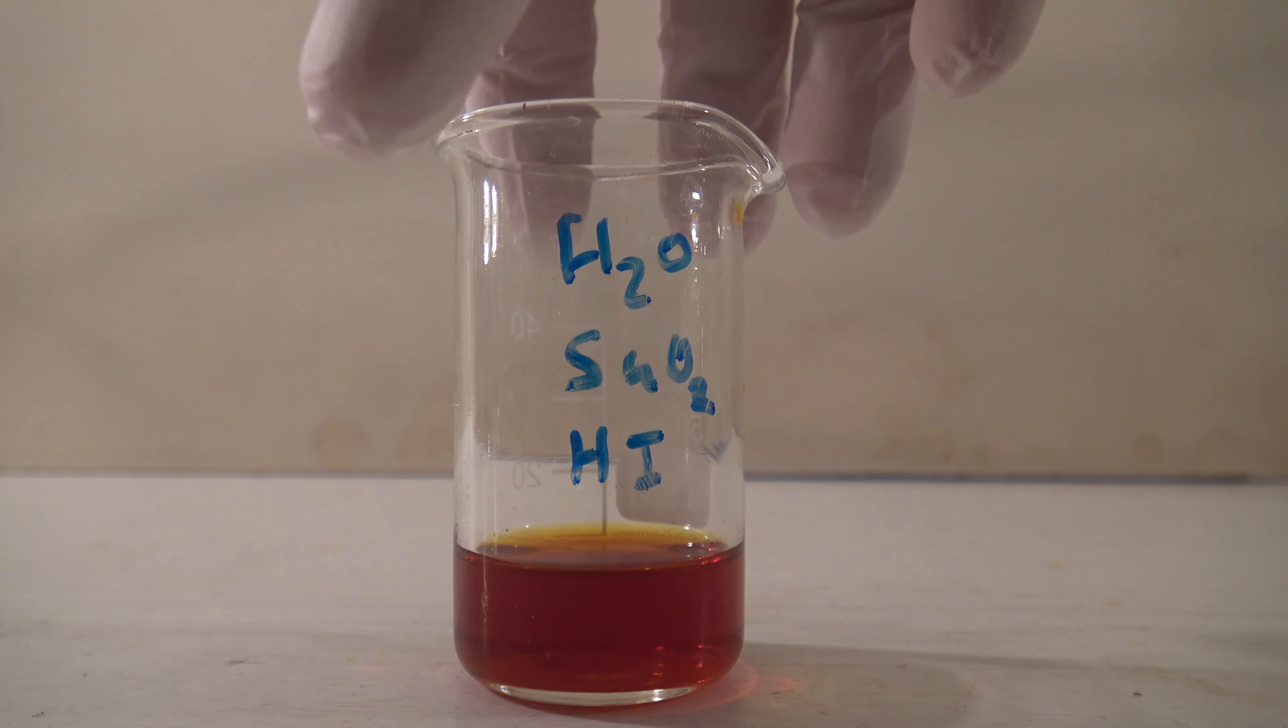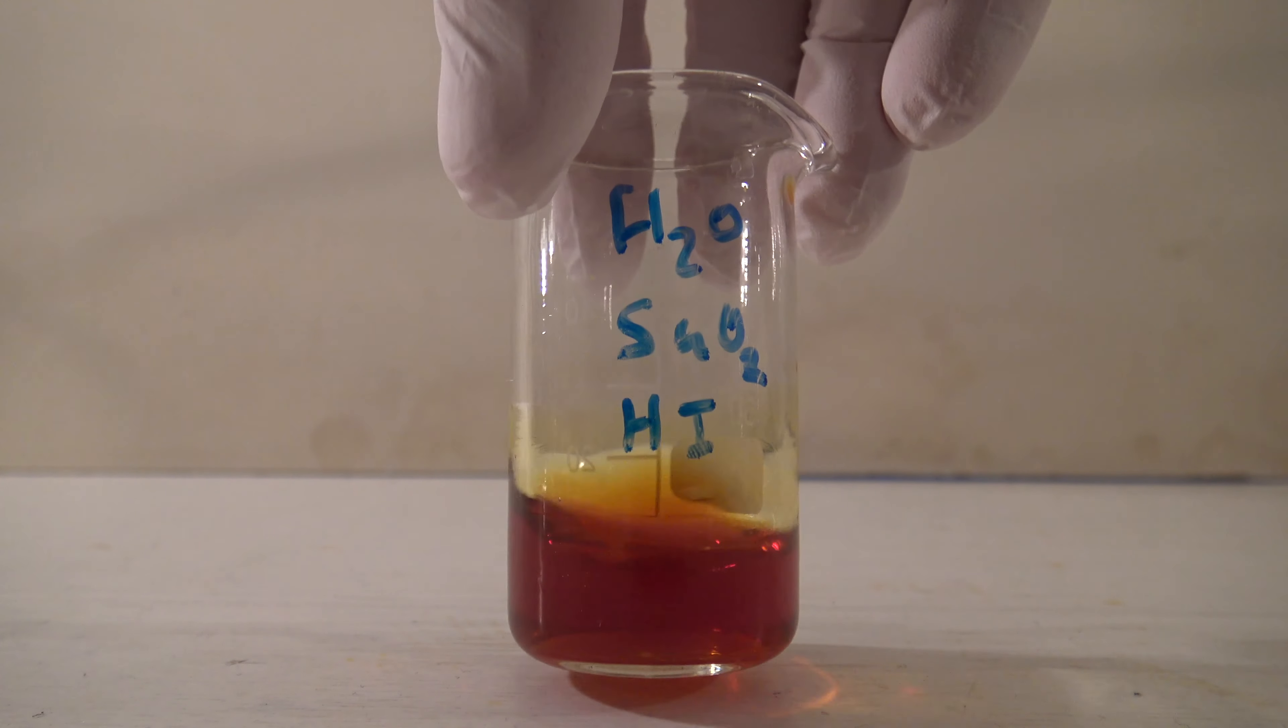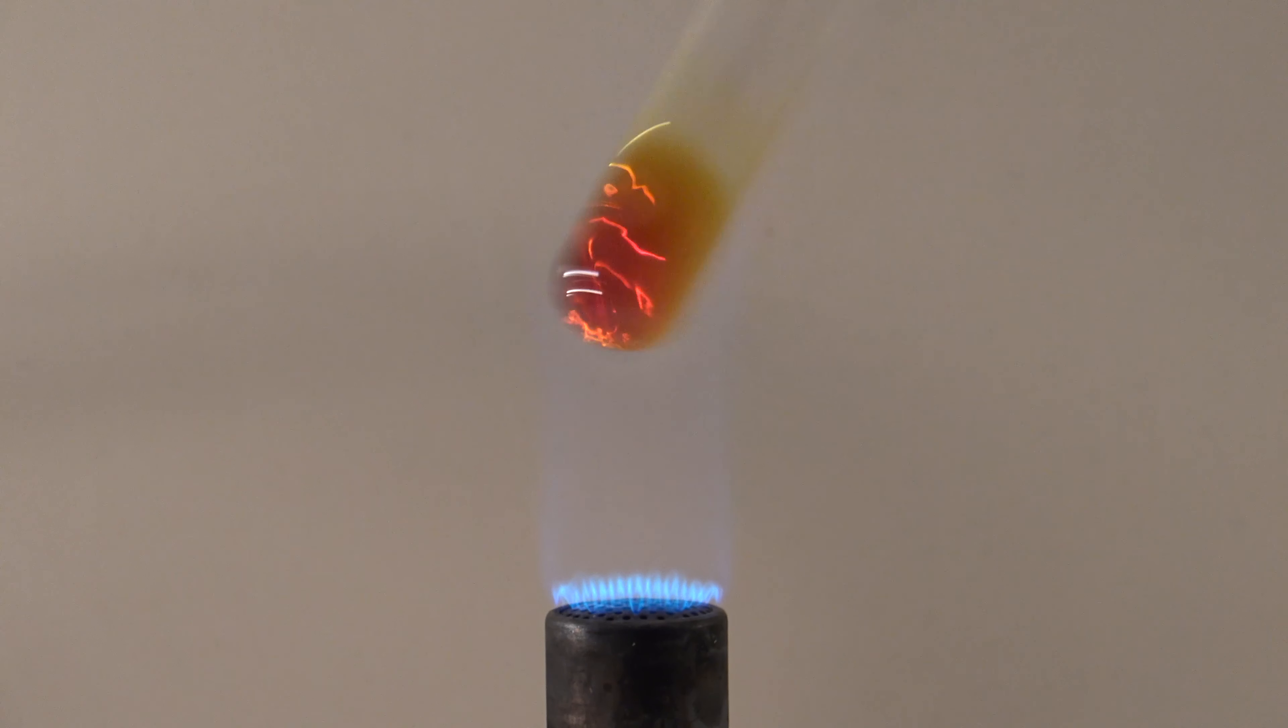The tin oxide goes back into solution after a while but precipitates again on heating. This was the synthesis and a few properties of tin(IV) iodide. I hope you enjoyed, please rate and comment.